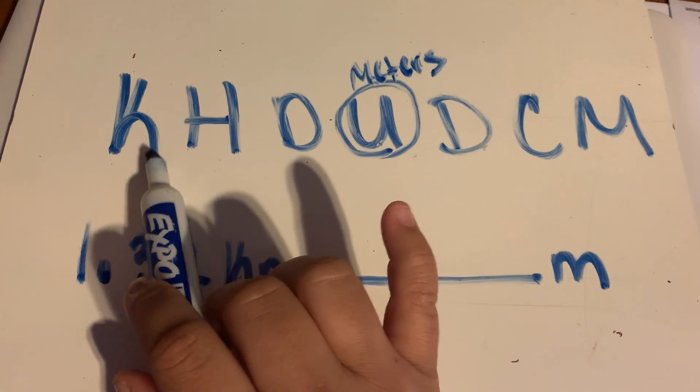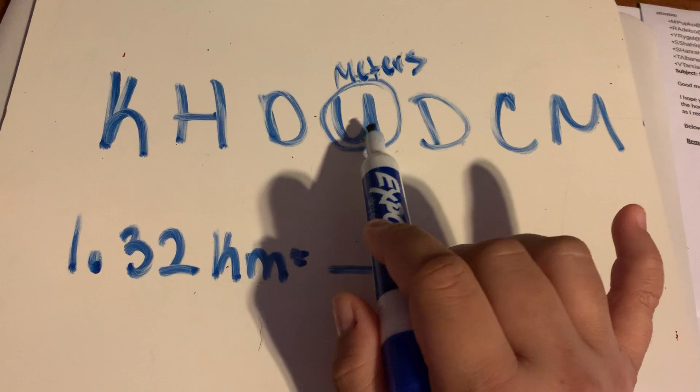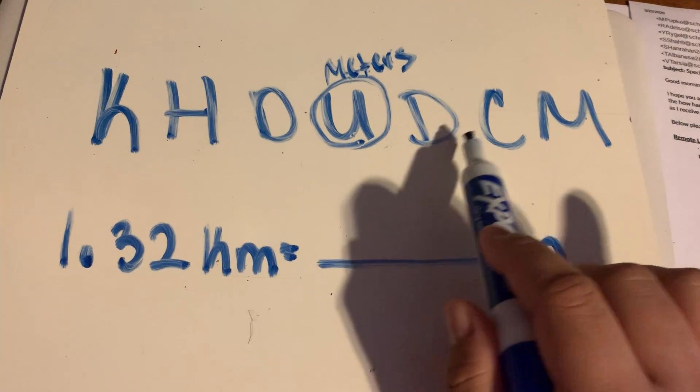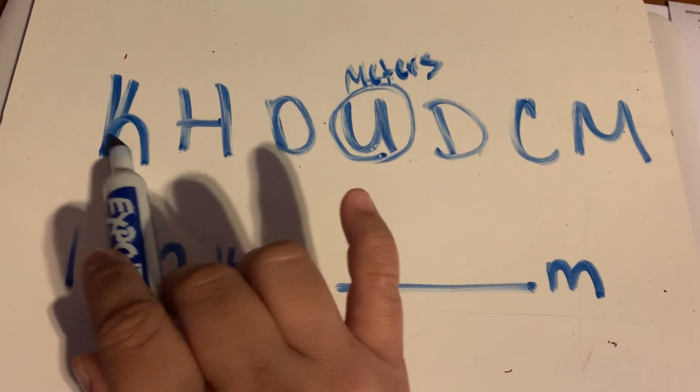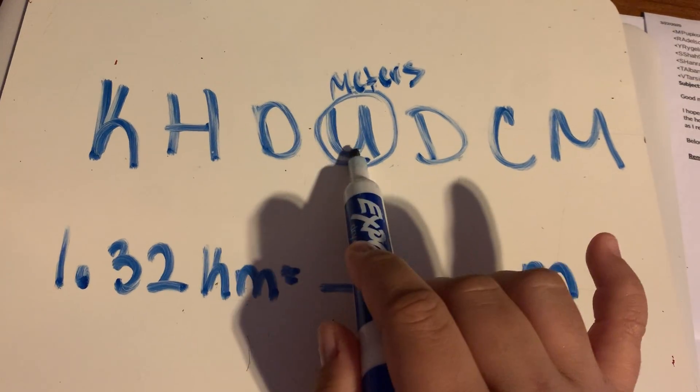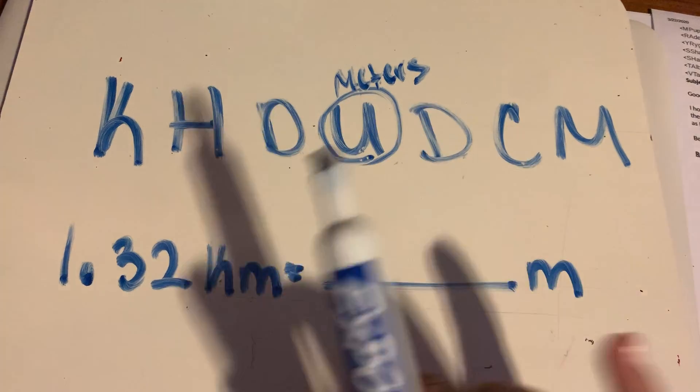So just as a review, this is kilo, hecto, deca. Our unit today is meters, deci, centi, milli. And you also learned the really fun way to remember it is King Henry died unusually drinking chocolate milk. Poor King Henry.